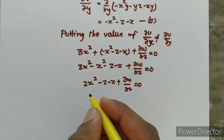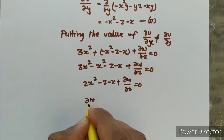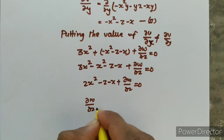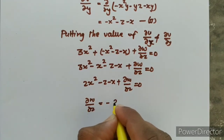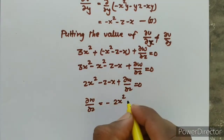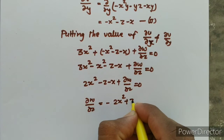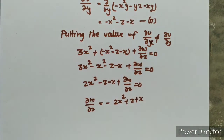Next, we solve it. Then del w upon del z equals minus 2x squared plus z plus x.